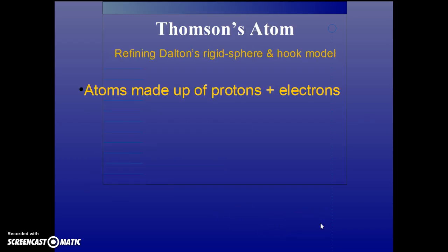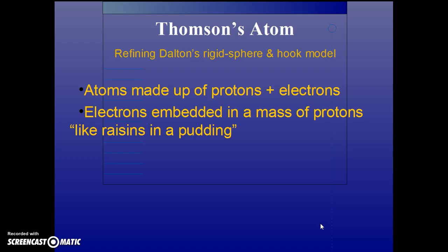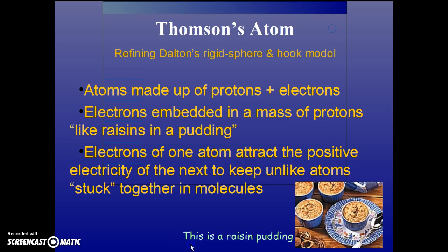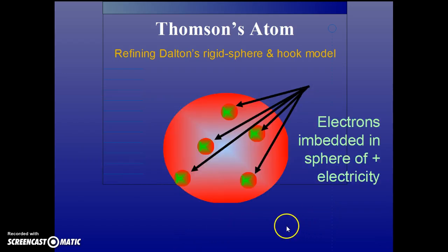Thomson's atom is made up of protons and electrons. The electrons are embedded in a mass of protons, like raisins in a pudding. The electrons of one atom attract the positive electricity of the next to keep atoms stuck together in molecules. This explains the existence of chemical compounds. We ask the question, would this deflect anything? That's the question Rutherford later added. Thomson's atom - electrons are embedded in a sphere of positive electricity. This is a model that can be tested. It's an improvement on Dalton's model because it allows us to stick atoms together to form molecules and therefore compounds.